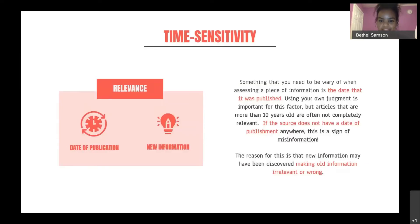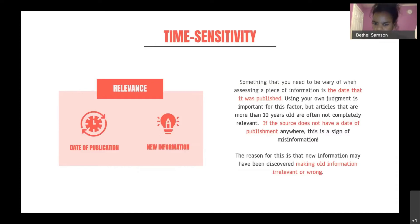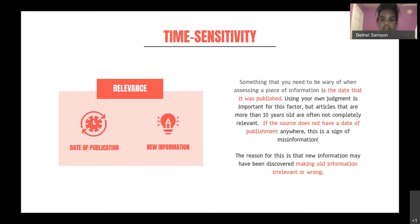Time sensitivity is also important. The date of publication matters — if it's too old, then the information being presented may be outdated and may have changed. New information may have been discovered since the time of publication, so if an article is too old, newer information may have been published since then, making the old information irrelevant, outdated, or even wrong.